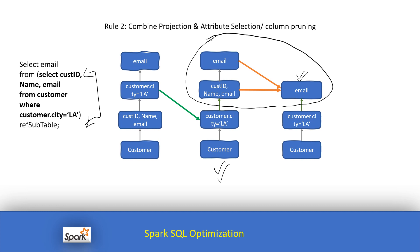What we need is just the email column. For example, if we have one million customer records, after applying the LA filter, maybe 50,000 records remain. Out of those 50,000, we don't need all fields — we just need the email. So the data set is drastically reduced. These are the rules we apply in logical optimization.